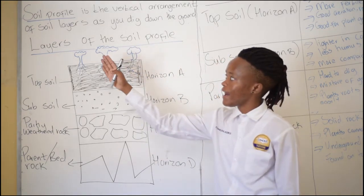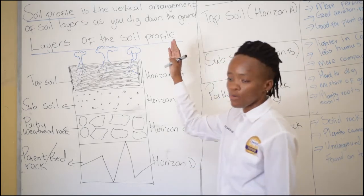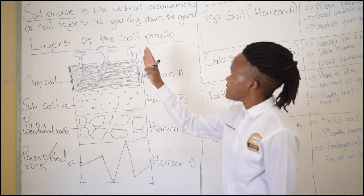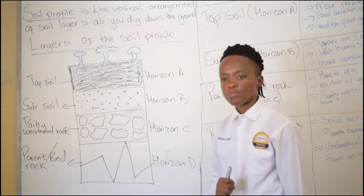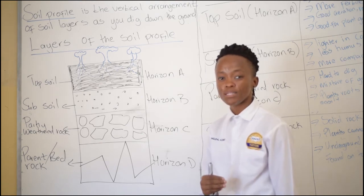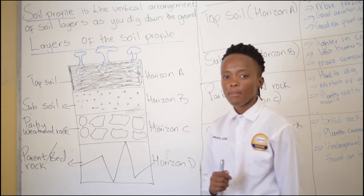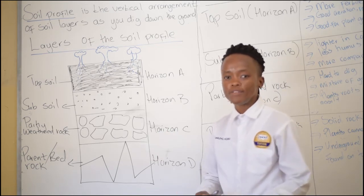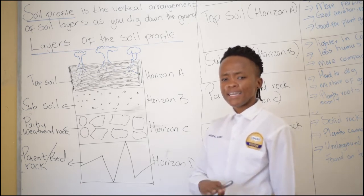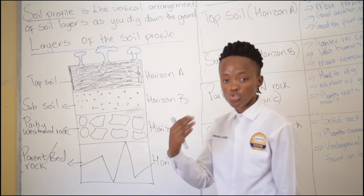Soil profile is the vertical arrangement of soil layers as you dig down the ground. You have to understand that different farmers don't just plow their crops, and trees don't just grow at a place — it depends on the profile of that soil. When you talk about soil profile, we are talking about the arrangement of the layers. When you dig down, you can see that there are different colors of soil. That's the profile of the soil.